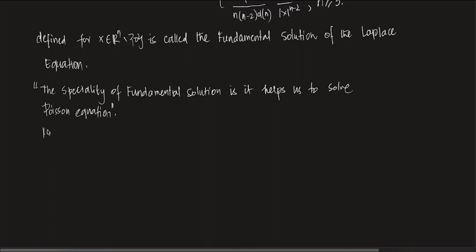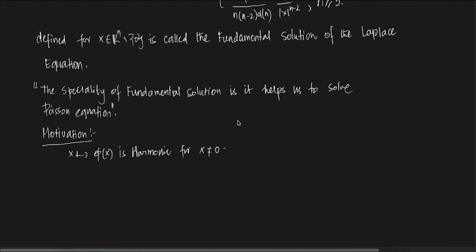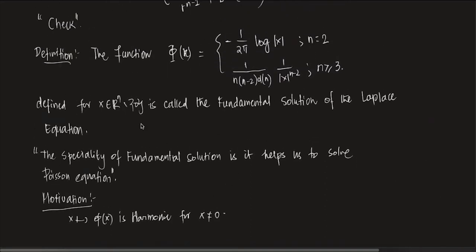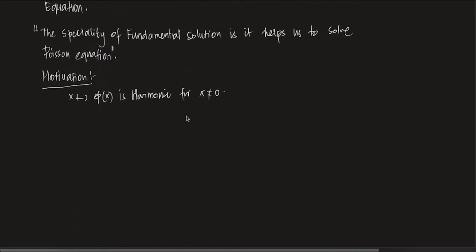So motivation. Now, let's say x → φ(x). This is harmonic for x ≠ 0, because we have seen that φ solves this problem for all x in ℝⁿ except at 0. So basically this is harmonic for x ≠ 0.